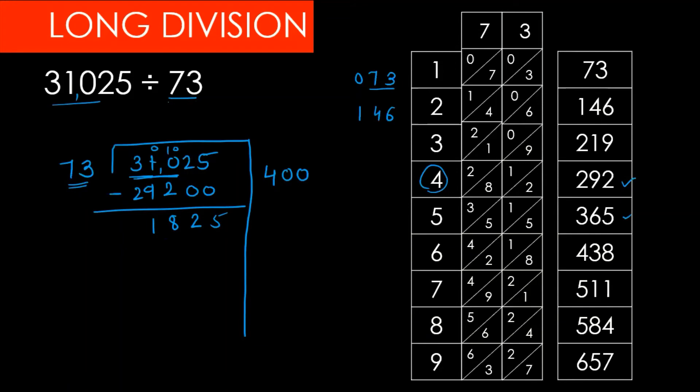Now 182 divided by 73. The first three numbers is 182, so 182 divided by 73 is 2. We use 146. Here we will bring down 5.